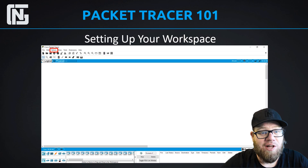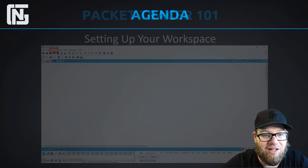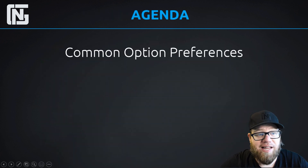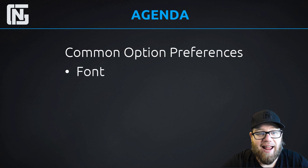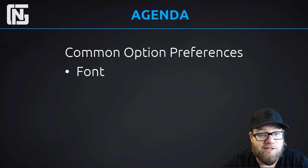We are going to be customizing our workspace in Packet Tracer so each time we open up Packet Tracer, it looks just the way we want it to look. We're going to cover the most common options and preferences, and we'll start by showing you how to set up the font and the background for your command line windows, in case there's a particular size or color scheme that you want.